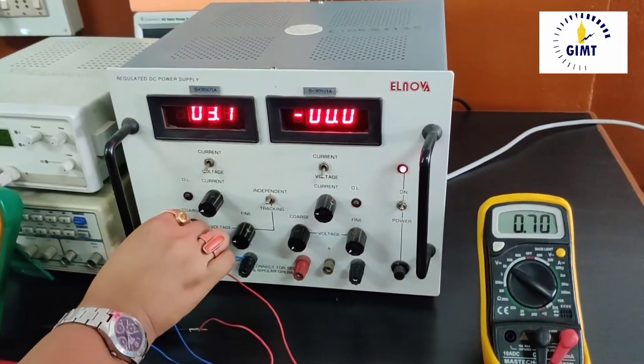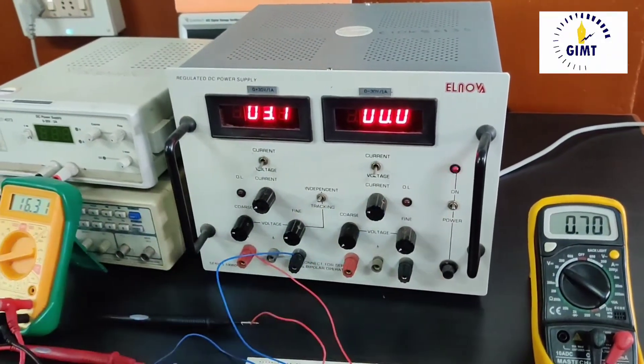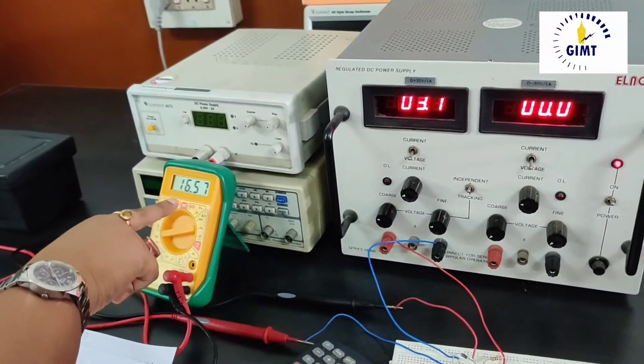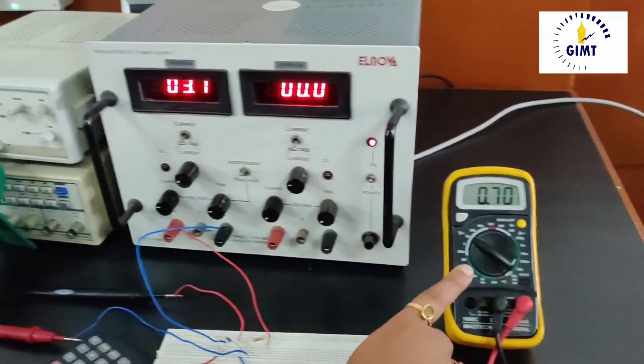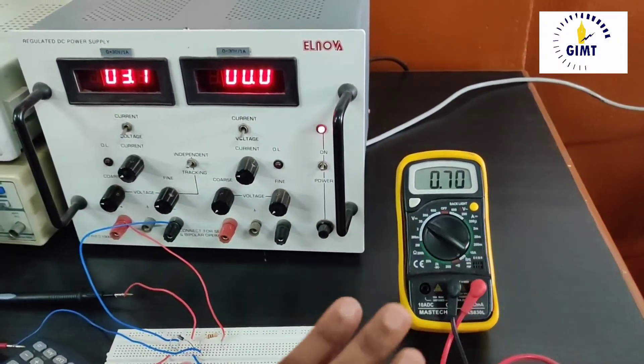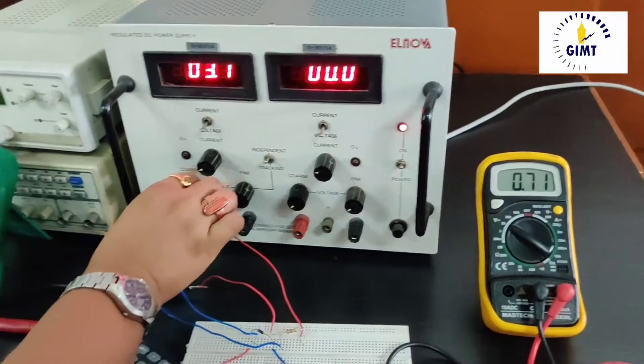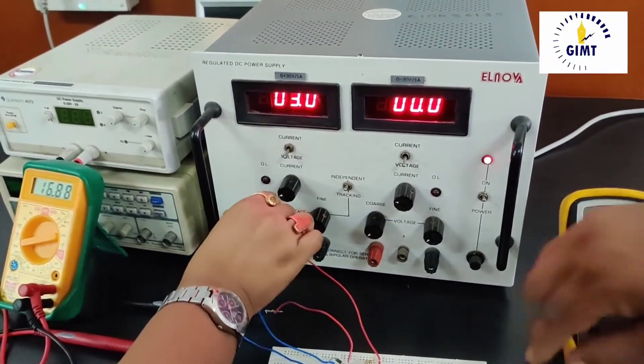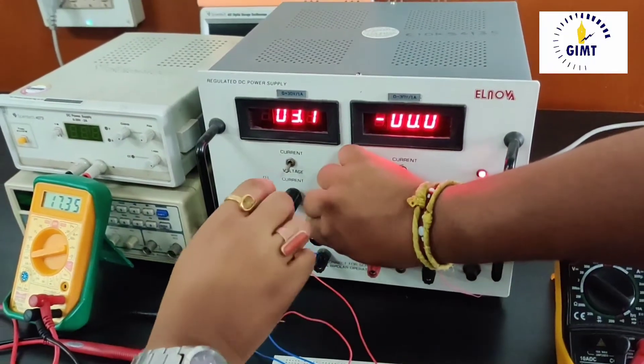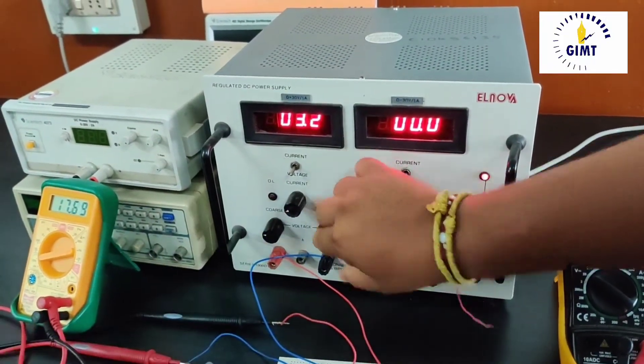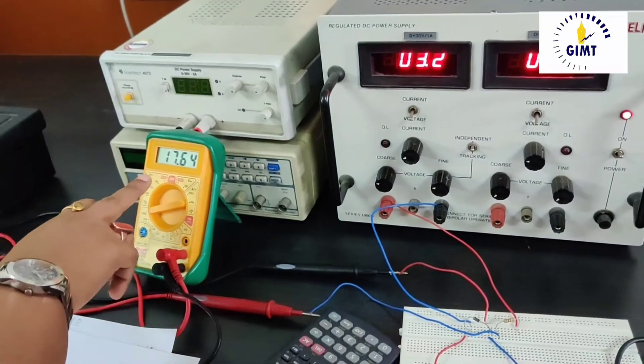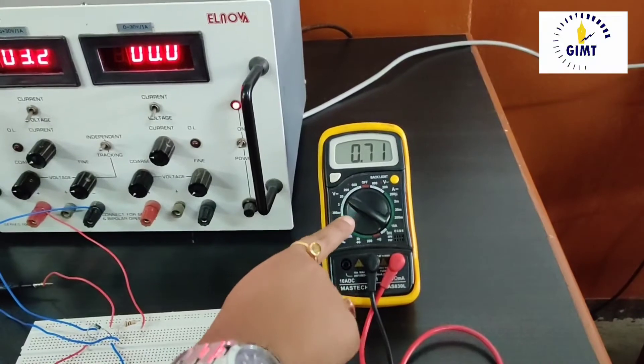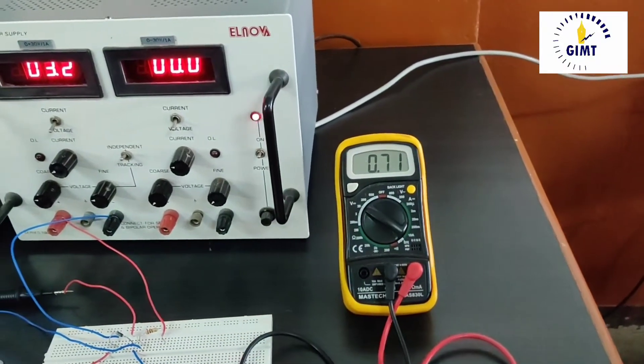Now, if I take small steps like 3.1 volt, 16.57 milliampere and 0.7 volt. That is the diode voltage has become constant. Again, at 3.2, the current has increased 17.6 milliampere but the diode voltage is again constant at 0.71 volt.